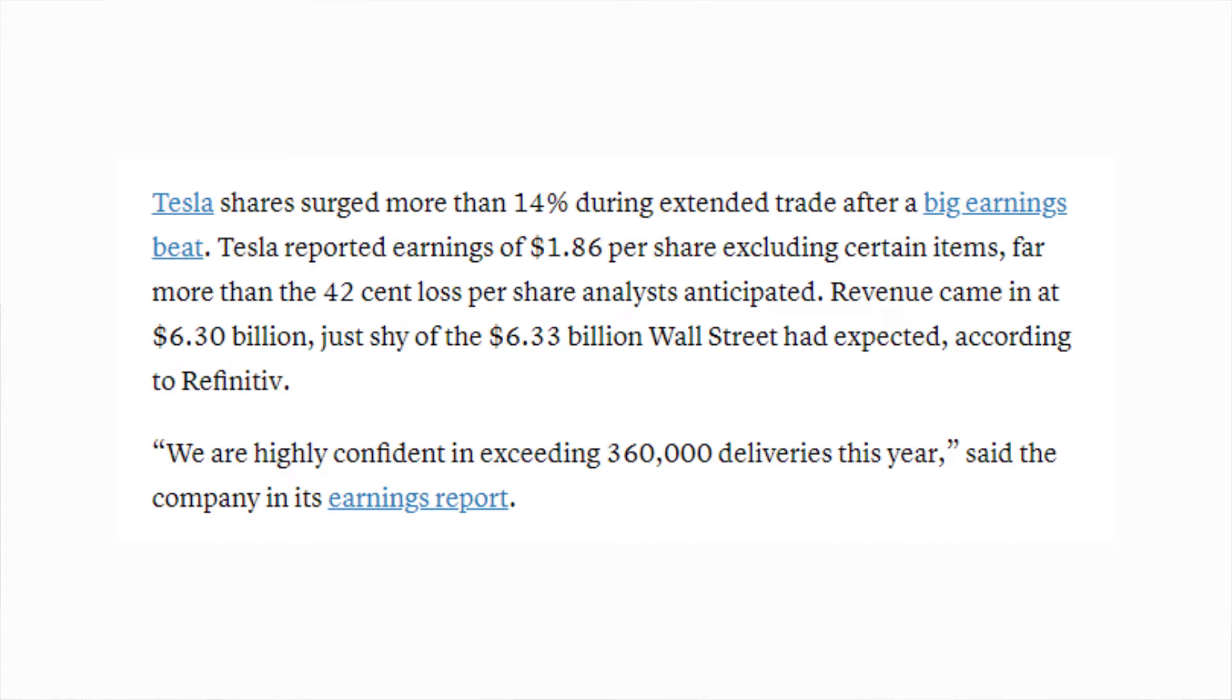The earnings per share was really the big standout thing because this is a really big quarter for Tesla. Q3 and Q4 are the strongest quarters for Tesla so I was looking for good numbers to be fair as an investor. Their earnings per share was $1.86 where they were expected to make a 52 cents loss, so that was definitely a very nice beat. To be honest with you I was hoping they were going to make a profit on that EPS and if it was a loss it would have been slightly worrying for me.